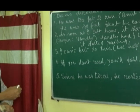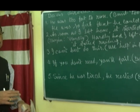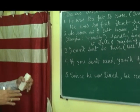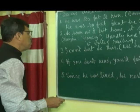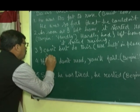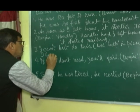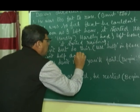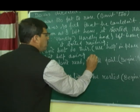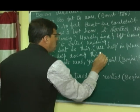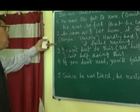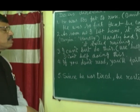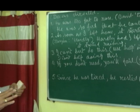Next example: 'I can't but do this.' I'll tell you the meaning in Bengali — it means 'na kore parina'. Use 'help' in place of 'but', so it becomes: 'I can't help doing this.' Both sentences have the same meaning — 'I can't but do this' and 'I can't help doing this' are equivalent.